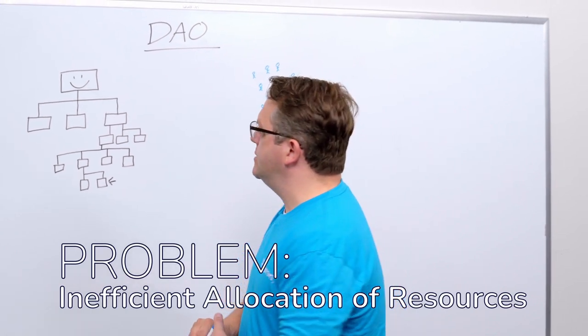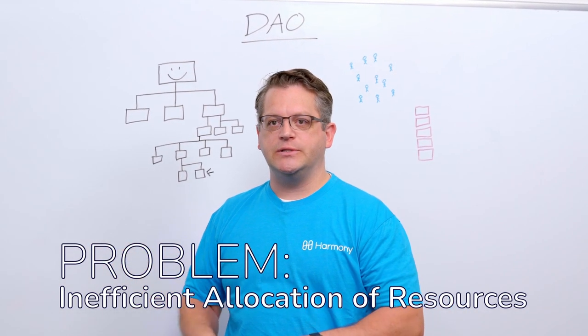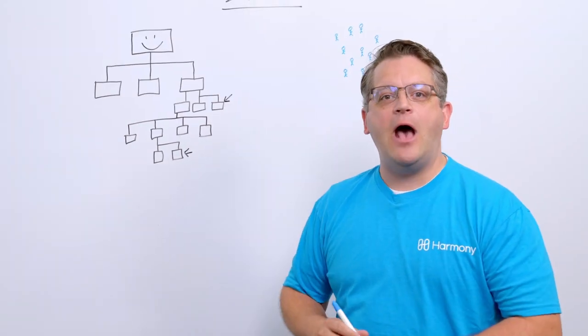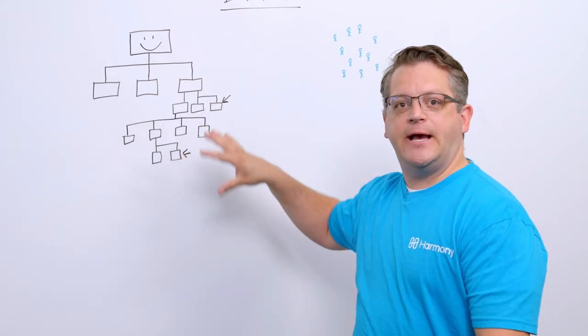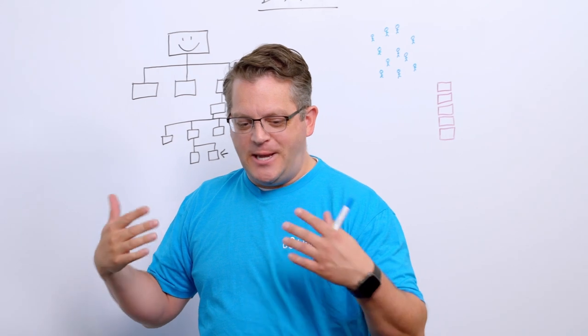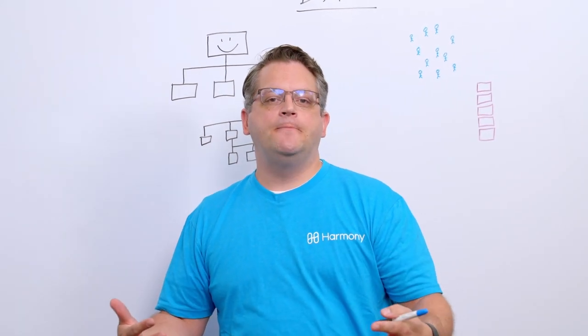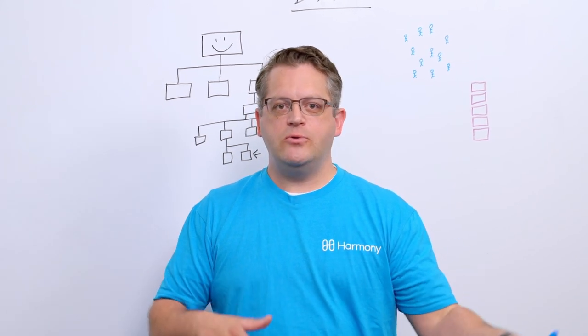Because what we are seeing here is we're seeing a very inefficient allocation of resources. Who on earth is this guy? And how is his work actually contributing to the success of the entire organization? So what was created in blockchains and what has been created in DAOs is a decentralized autonomous organization that runs on-chain through smart contracts.